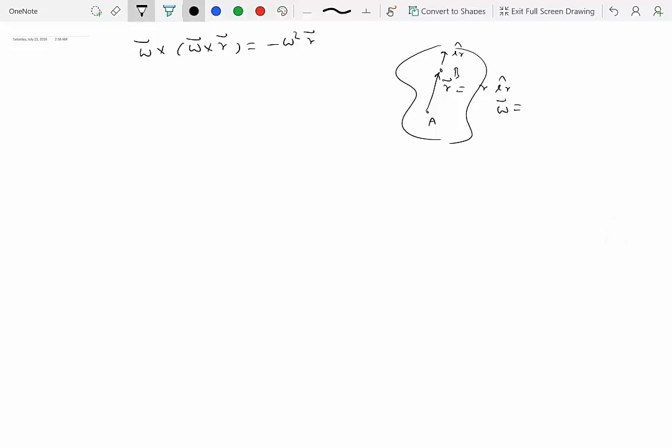And omega is theta dot k hat, so k hat is perpendicular to the plane of this figure. And let's say this is how we're measuring theta. Then we know e_theta hat would be another unit vector perpendicular to e_r hat, pointing that way in the counterclockwise direction.